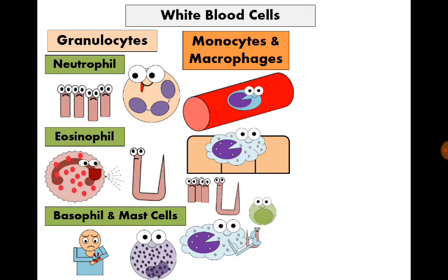Also, macrophages can secrete toxic products onto worms to kill them. Now let's talk about the cells responsible for acquired immunity — the lymphocytes. Lymphocytes target only specific microbes and are very efficient in killing them.